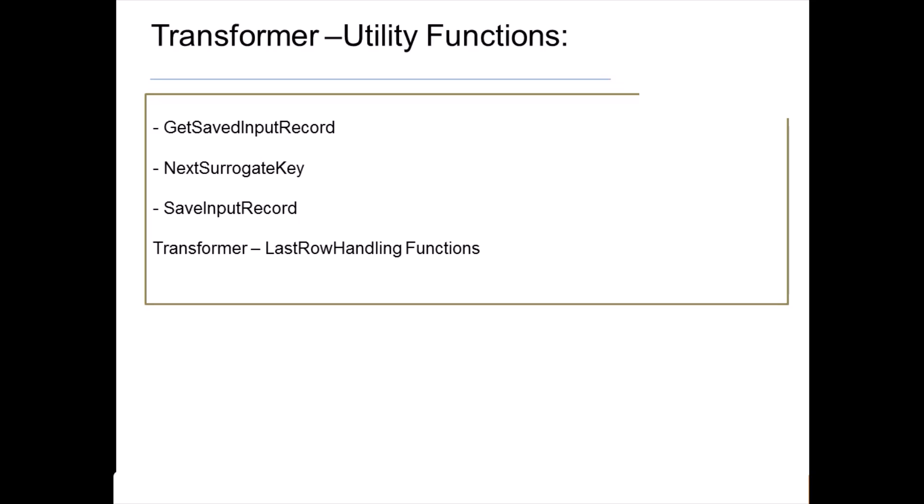There are also transformer last row handling functions. LastRowInGroup, as the name says, identifies the last row in a group. You define an input column as the parameter, which becomes the group-by column. For example, if we specify country_ID, it groups by country_ID and for whatever is the last row in the group, it sets the value to 1; otherwise 0. This lets you identify the last row in a group based on a key column using the LastRowInGroup function.